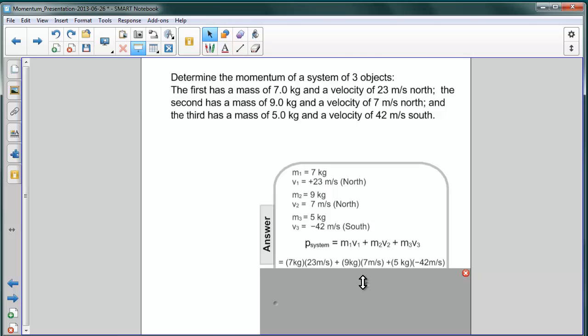If we follow through with each one of those products, we're going to get 161 kg·m/s for the momentum of object one, 63 kg·m/s for the momentum of object two, and negative 210 kg·m/s for the momentum of object three.